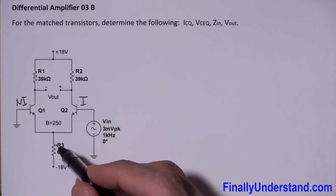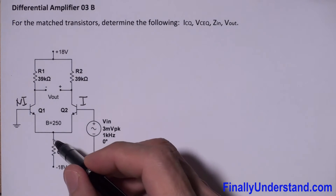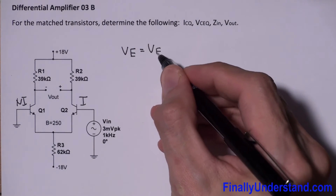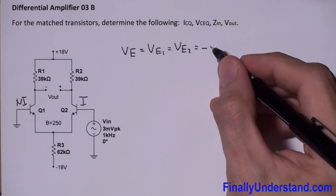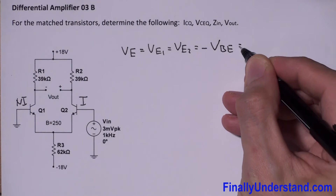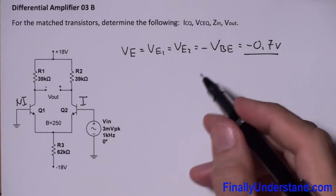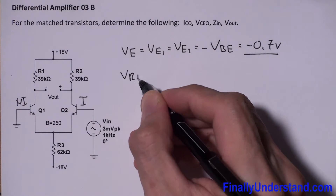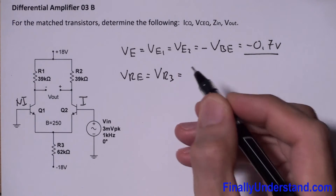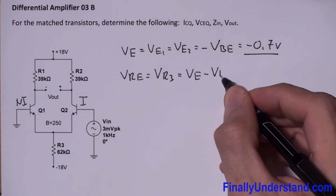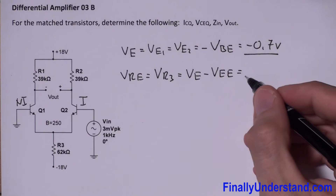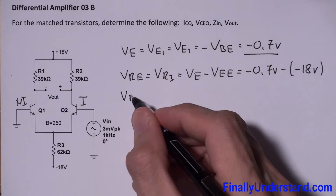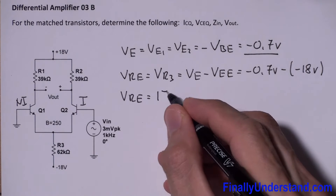In order to find ICQ, I have to find the voltage across this resistor first. To find that voltage, I need to find VE. VE is equal to VE1, which equals VE2, which equals negative VBE, which is equal to negative 0.7V. So VRE, which equals VRE3, equals VE minus VEE, which is negative 0.7V minus negative 18V. So VRE3 is equal to 17.3V.